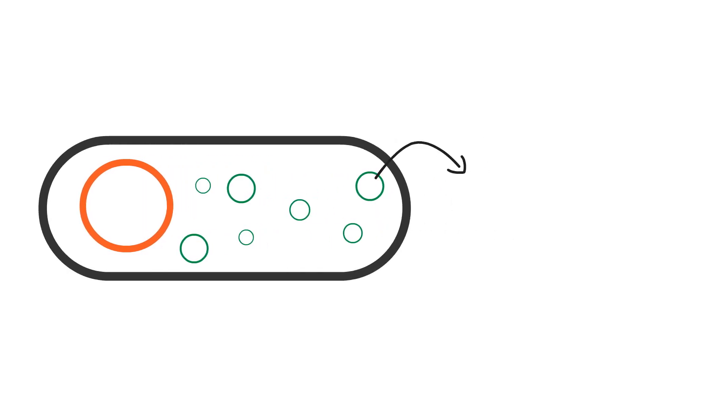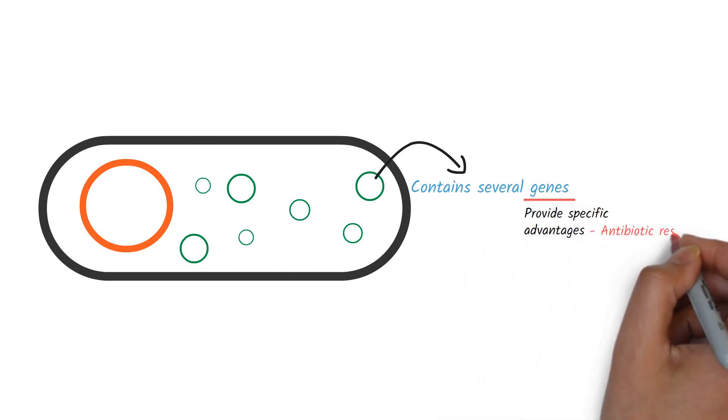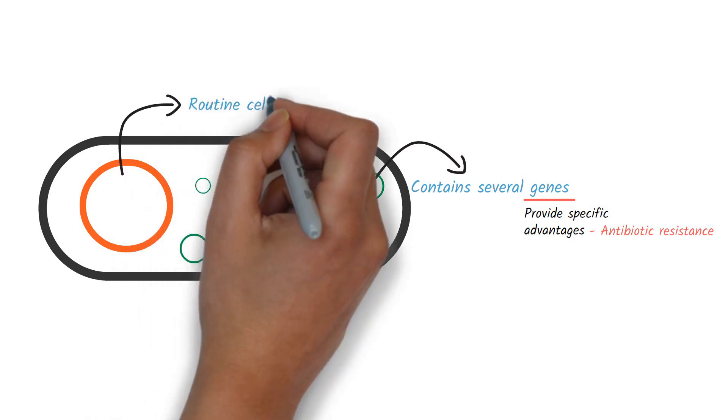The number of plasmids in a cell may range from one to several hundreds, and each plasmid contains several genes. The genes in the plasmid provide specific advantages to the cell, like antibiotic resistance, while the normal chromosome takes care of routine cellular functions.